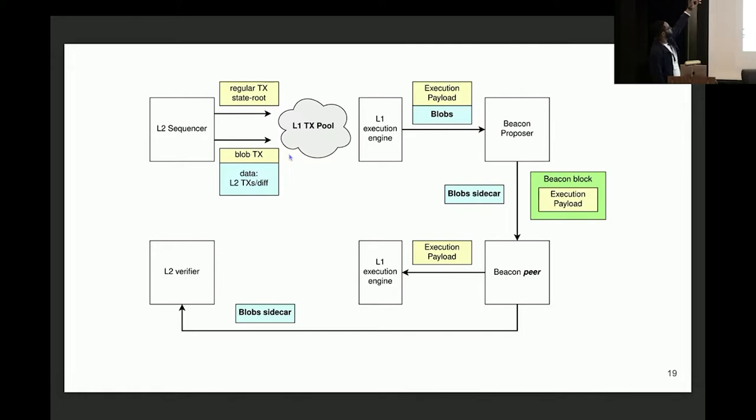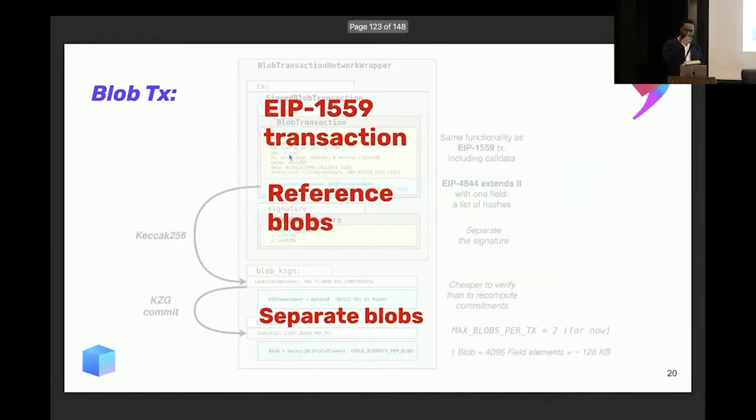This is another diagram that shows the whole workflow. Basically, same thing: you have an L2 sequencer, takes transactions, rolls them up into a rollup, posts batch data into L1. The L1 takes those transactions as it's building a beacon block, provides those transactions in the beacon chain. The beacon chain gets proposed, that data gets gossiped throughout the network, and then an L2 verifier can take that data and derive the chain to get to the exact same state that we had.